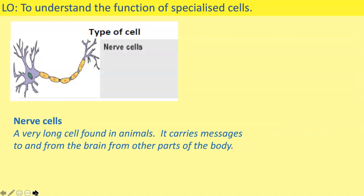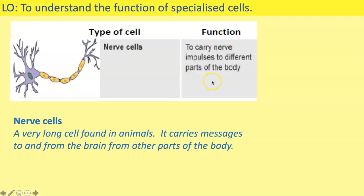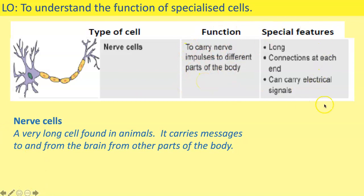The next cell is a nerve cell. A nerve cell is a very long cell found in animals — it carries messages to and from the brain and other parts of the body. Its function is to carry nerve impulses to different parts of the body. Its special features are that they are long, have connections at each end, and can carry electrical signals. Make your card sort — diagram, name, function, and special features. Cut your cards out and put them to one side.